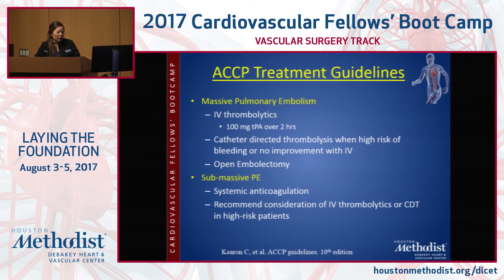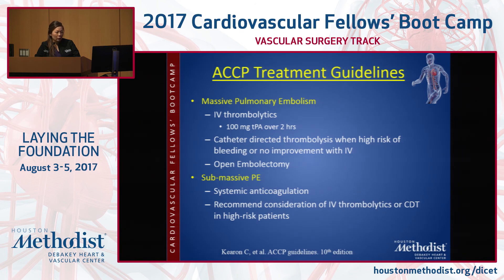The CHEST 10th edition treatment guidelines: for massive pulmonary embolism, the recommendation is IV thrombolytics — 100 milligrams TPA over two hours. Catheter-directed thrombolysis only when the patient is at high risk of bleeding, or there's no improvement with systemic thrombolytics, or open embolectomy if there's absolute contraindication to any lysis. For submassive PE: anticoagulation and consideration of catheter-directed therapies. For the massive PE, stop the heparin when you're giving the systemic TPA.